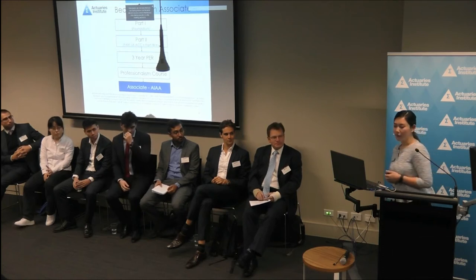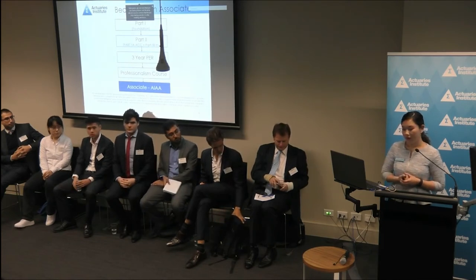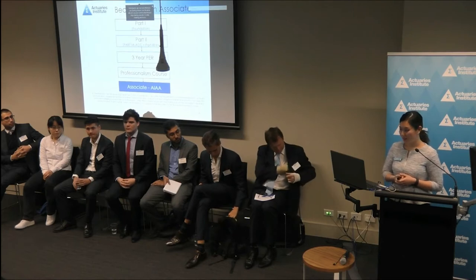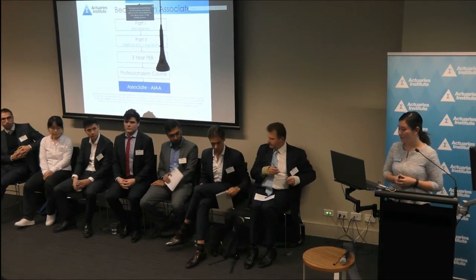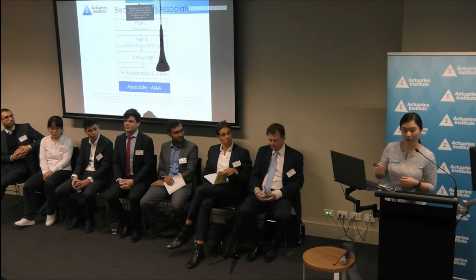I'll first start off the presentation by going through the Associate Pathway. First, you need to complete Part 1, which consists — if you're doing it through the UK system — of eight core technical examinations. However, you can do this through a university by doing an undergraduate degree. Part 2 consists of the actual control cycle as well as investments and asset modelling. You also need to complete the three-year practical experience requirement. As long as you've commenced your actual studies, you can count your paid work experience towards that requirement.